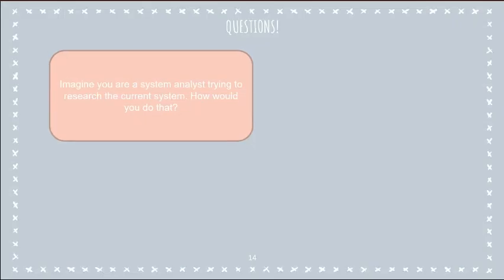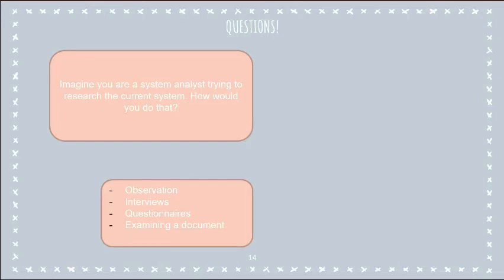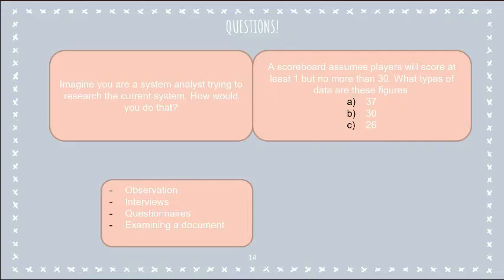Okay so questions. I want you to imagine that you are a system analyst and you are trying to research the current system. So we are in the first phase of the system life cycle. How would you do that? You've got four options. This is a four mark question. The answer is observation when you watch people, interviews asking them directly one-on-one, questionnaires kind of like surveys, and examining an existing technical documentation.